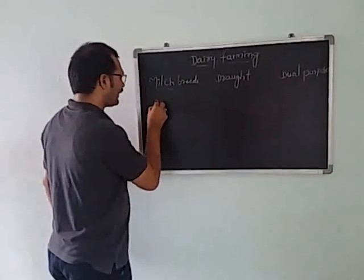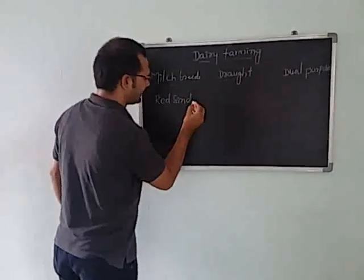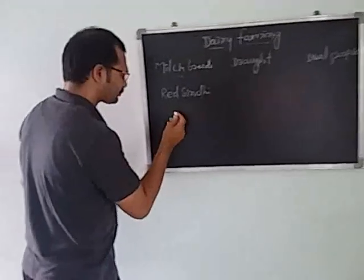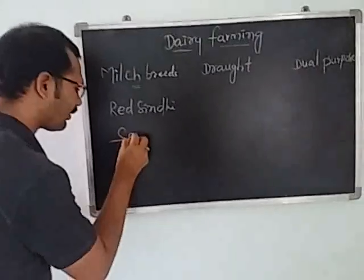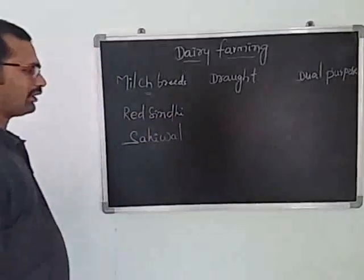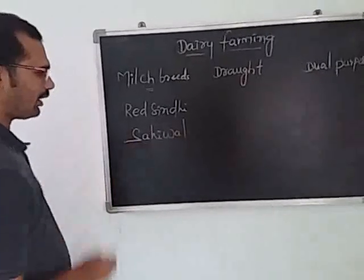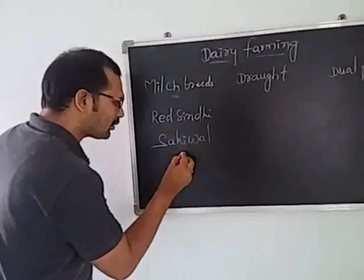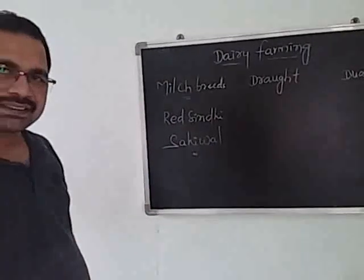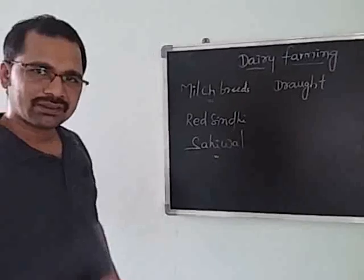Examples of milch breeds are Red Sindhi and Sahiwal. This group of breeds we call as milch breeds, mainly grown for milk purpose.